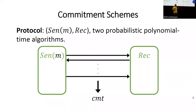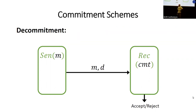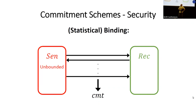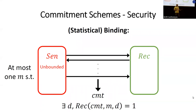A commitment scheme is a protocol between two classical polynomial-time algorithms: a sender who wants to commit to a message, and a receiver who gets this commitment. At the end of the interaction, the sender can reveal the value and decommit to this unique value, sending a message and a decommitment, and the receiver can decide to accept or reject. In terms of security, we have binding — specifically, statistical binding says that any unbounded sender, interacting with this efficient receiver, can decommit to at most a single message.